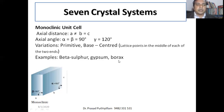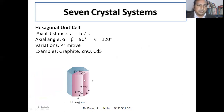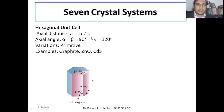Hexagonal unit cells: the axial distances are a = b ≠ c, and the axial angles are α = β = 90° while γ = 120°. There is only one variation: primitive. Examples include graphite, zinc oxide, and cadmium sulfate, which arrange their molecules in a hexagonal pattern.